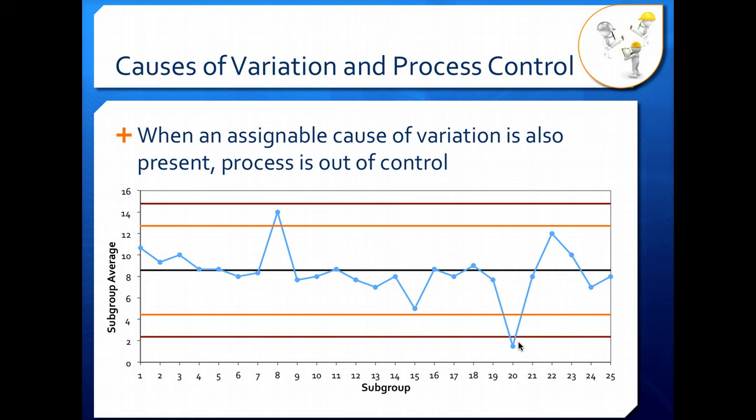Later on, we'll take a look at how to put these charts together and how to identify certain patterns that can also show up that tell us something about process control. But when you have a point that's outside of your action limits like here or outside of your warning limits here, then we know that our process is beginning to go out of control and we need to do something to bring it back into control.